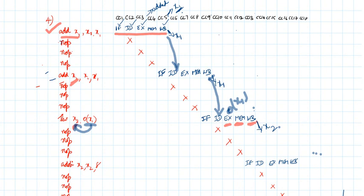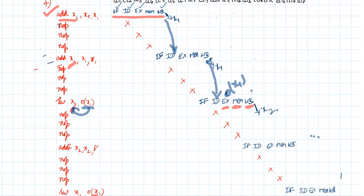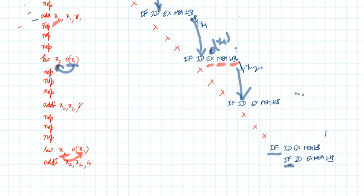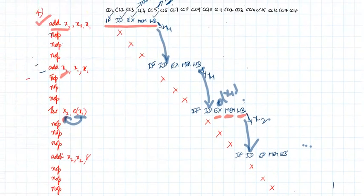Instruction I4 is dependent on instruction I3 for register x2, so we need to insert 3 NOPs. After those NOPs, x2 is reflected for I4. For instruction I5, which stores x2 to memory location 0x1, the execute stage finds the address and performs a memory write — there is no write-back to a register for a store instruction. For I6 there is no dependency issue, so it starts execution in the next clock cycle immediately.